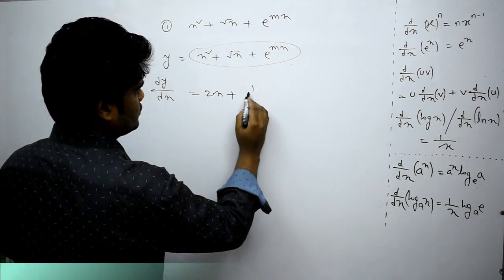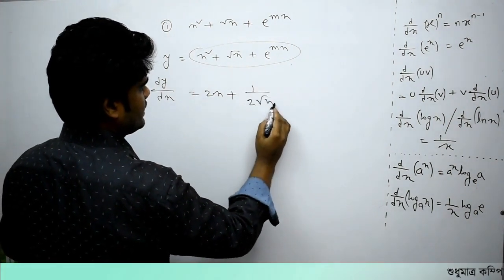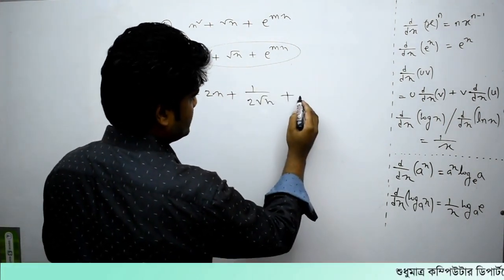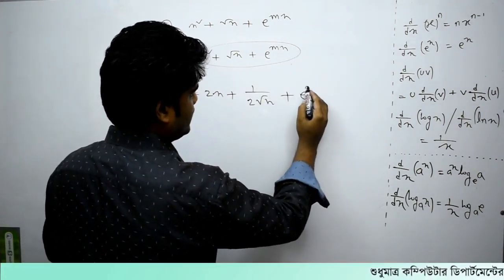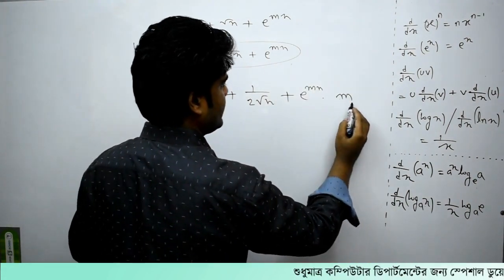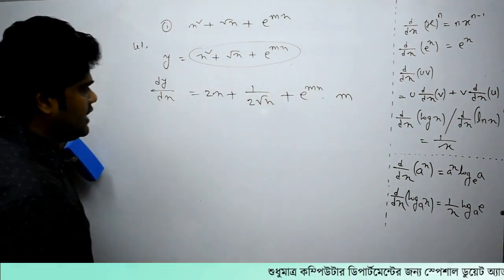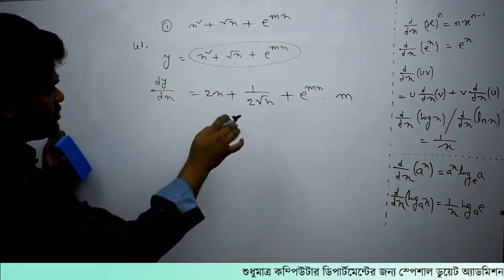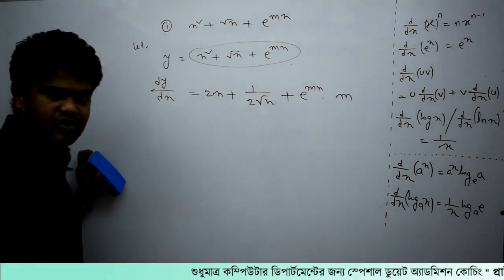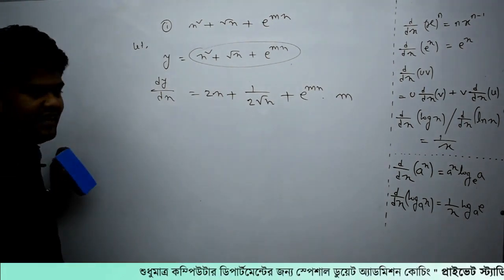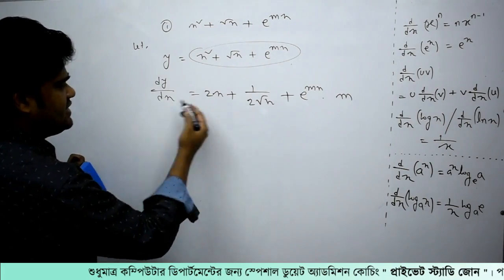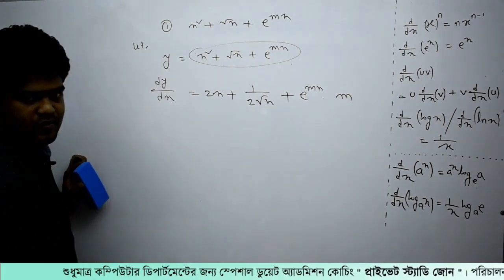Root x differentiation is 1 by 2 root of x, plus e to the power mx, differentiation is m. The genesis is very similar, so we can do it by the differentiation, so dy by dx is equal to the number.